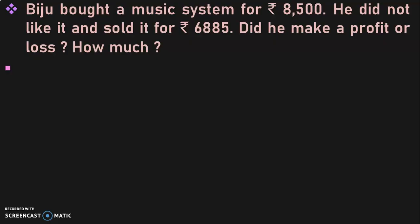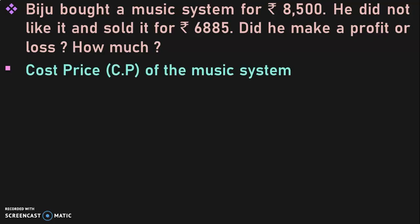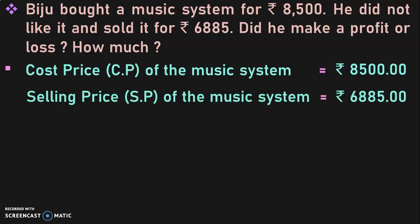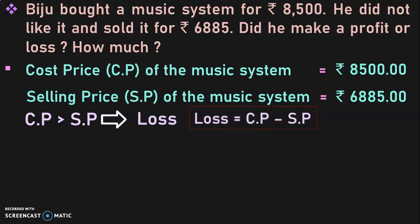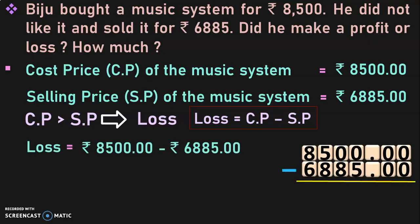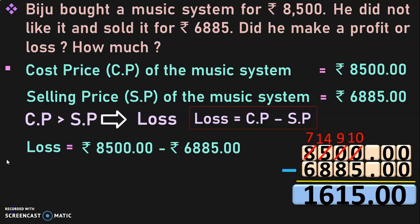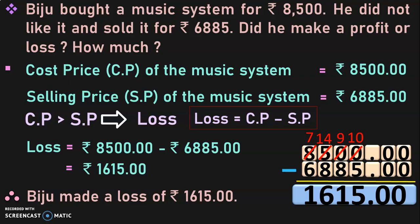Next sum: Biju bought a music system for Rs. 8,500. He did not like it and sold it for Rs. 6,885. Did he make a profit or loss, and how much? Note: profit and loss is a separate topic with a dedicated video linked in the description. Cost price = Rs. 8,500. Selling price = Rs. 6,885. Since cost price is greater than selling price, there is a loss. Loss = cost price minus selling price = 8,500 minus 6,885 = Rs. 1,615. Therefore, Biju made a loss of Rs. 1,615.